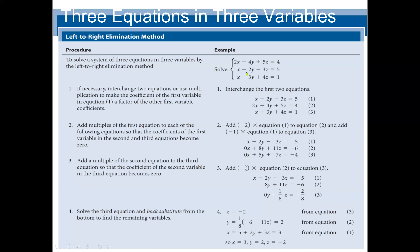To summarize: our goal first is to eliminate X from the second and third equations. Then eliminate Y from the third equation. When Y is eliminated, we have only Z, so we find Z. We come back to the new second equation, which has no X, and substitute Z to find Y. Then with Y and Z known, we put them into the first equation and solve for X.